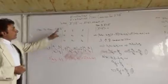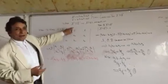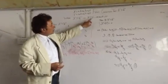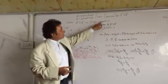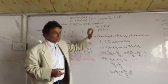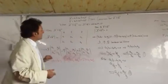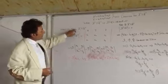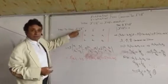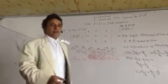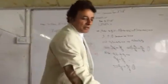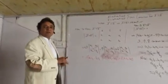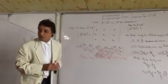Look students, when A is parallel to B, then A cross B is equal to sin 0 n cap, that is the zero vector. Now, how to find A cross B? To find A cross B, we will use the concept of determinants.